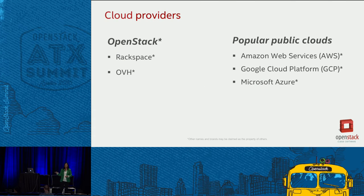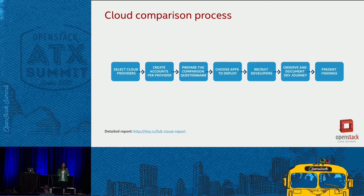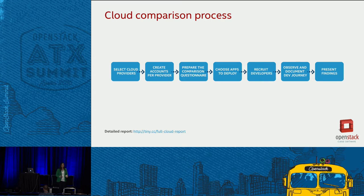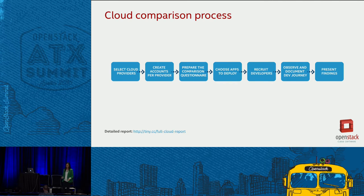We chose Rackspace and OVH as OpenStack providers against the most popular clouds. This is the process we followed to create our cloud analysis: first, we selected the cloud providers; then we created accounts using free trials, because that's the first way developers do things. We prepared a questionnaire — basically a spreadsheet with questions focused on assessing the developer experience at each development stage during the lifecycle. Then we selected the apps to deploy, choosing the starting tutorials on each provider. For OpenStack, we used MyFirstApp with LibCloud and Shade SDK because it's the only one available.